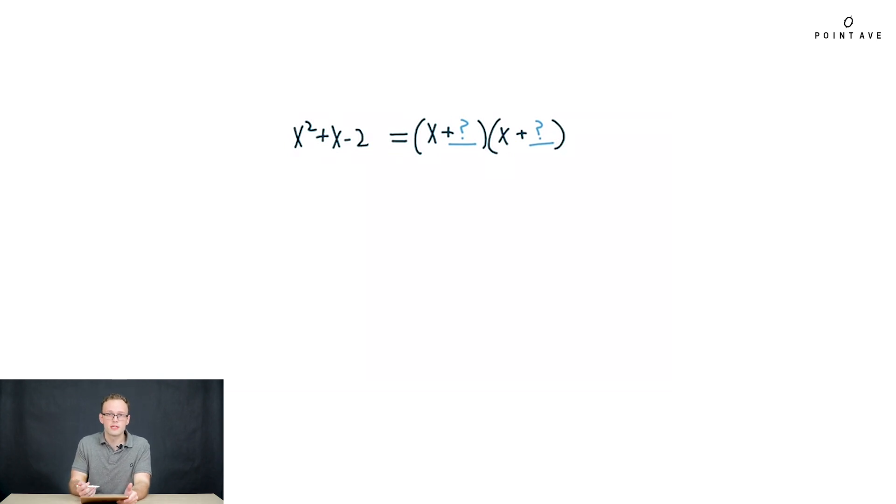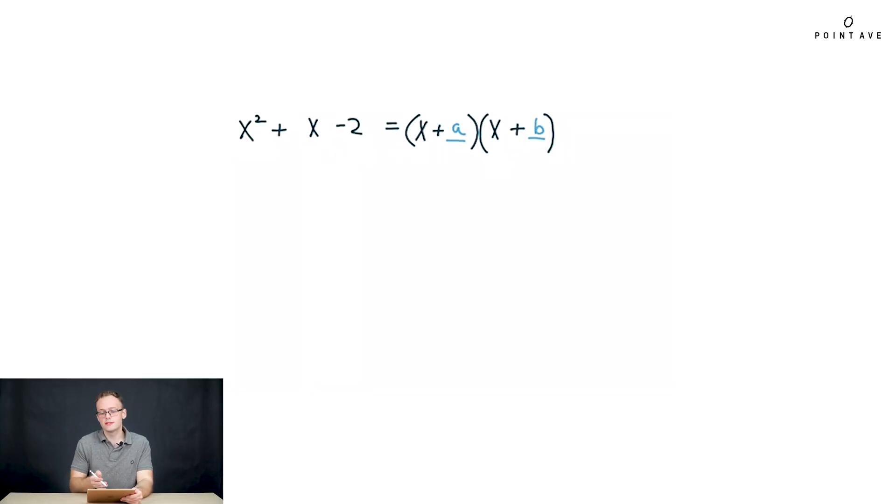Having simplified our problem to these two unknowns, which here we've written as a and b, how do we now find a and b? When we expand the right hand side, all of the coefficients need to exactly match the coefficients of the left hand side. The coefficient of x, which is 1, needs to match a plus b. This gives us that a plus b is equal to 1. And then matching with the no x term, we have minus 2 equals a times b. So that gives us two conditions for a and b.